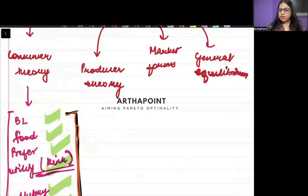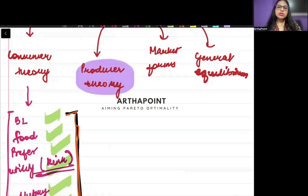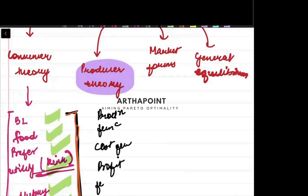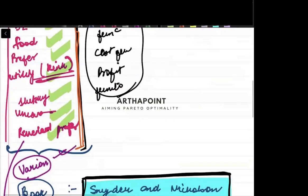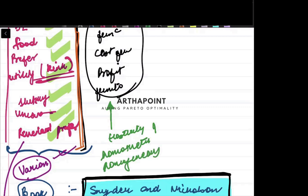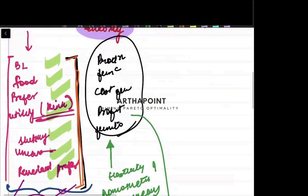The second aspect of microeconomics is producer theory, which can be divided into multiple parts: production function, cost function, and profit functions — these are the three major things you must cover. In producer theory, you need to look at important concepts like elasticity of substitution, homothetic production functions, and how they differ from homogeneous production functions. Again, a good book to follow for this part is Snyder and Nicholson, which has done a very good job explaining it.